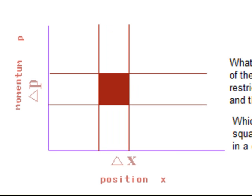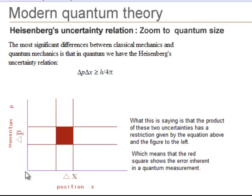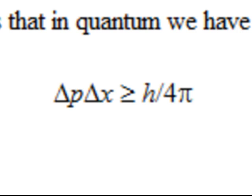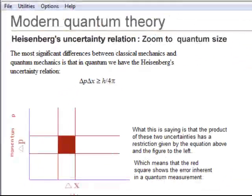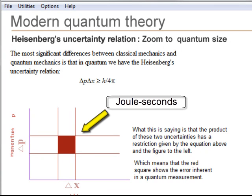We see that a classical point is no longer a point at quantum dimensions, but has finite size. Heisenberg's Uncertainty Principle states that the minimum size of this is Planck's constant divided by 4π. The units of momentum times position are joule seconds.